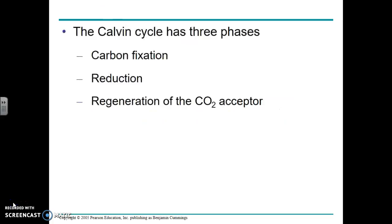Kind of just like the Krebs cycle, we're going to look at the Calvin cycle and not look at all the details, but sort of look at what happens in general. The Calvin cycle has three distinct phases. One is called carbon fixation, and carbon fixation is how CO2 is brought into the cycle. Then the second phase is the reduction of the carbon dioxide brought into the cycle. And then finally, the regeneration of the thing that accepted the CO2.